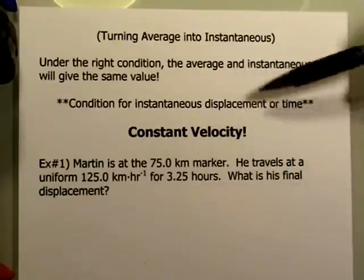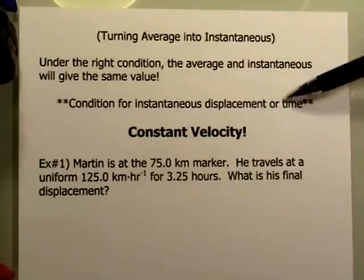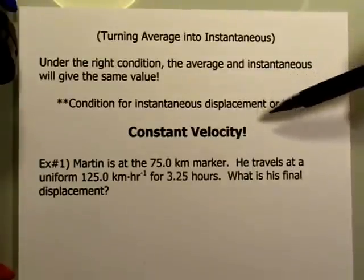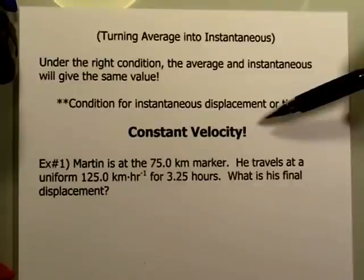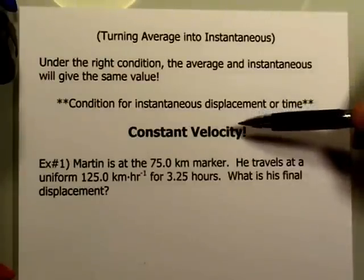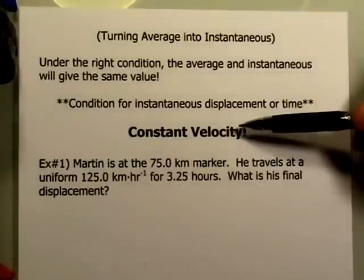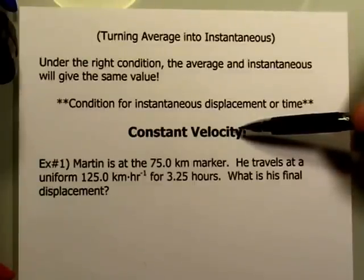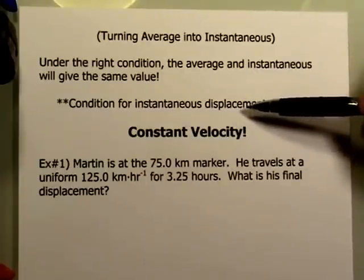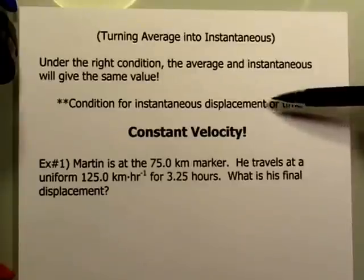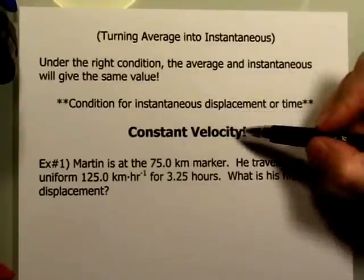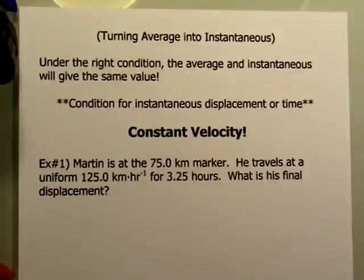That becomes important because if I want to calculate a displacement, time, or distance, and I want to know instantaneous values—for example, at five minutes into my trip, how far have I gone, or how long will it take me to travel 100 kilometers—then I really need the instantaneous values. To do that, we need to have constant velocity, and that's frequently the case.